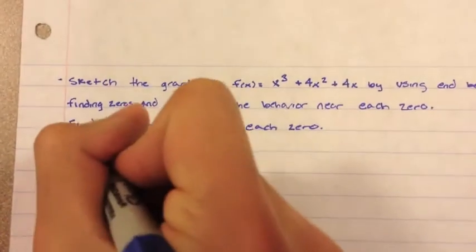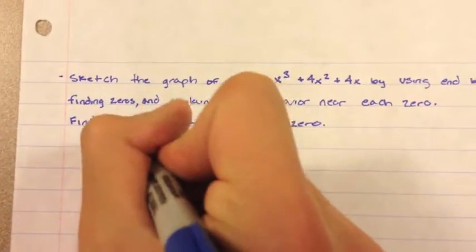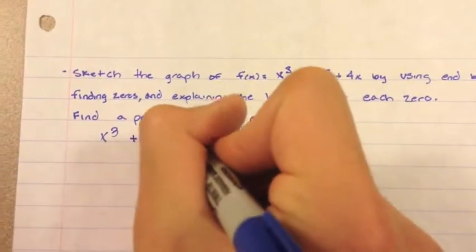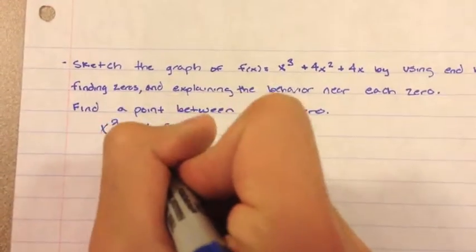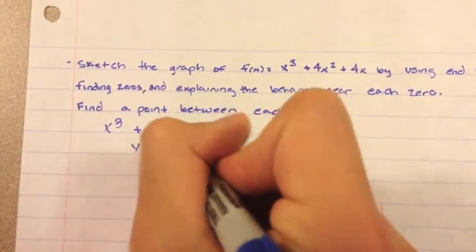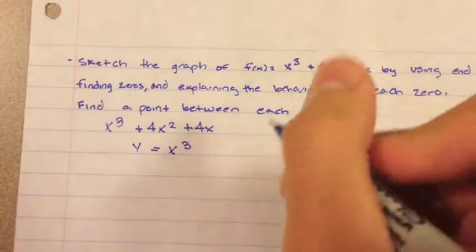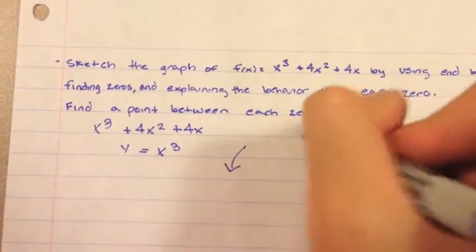So, from the equation x cubed plus 4x squared plus 4x, the parent function is y equals x to the third, and since it's positive, we know that the end behavior of the graph will look like this.